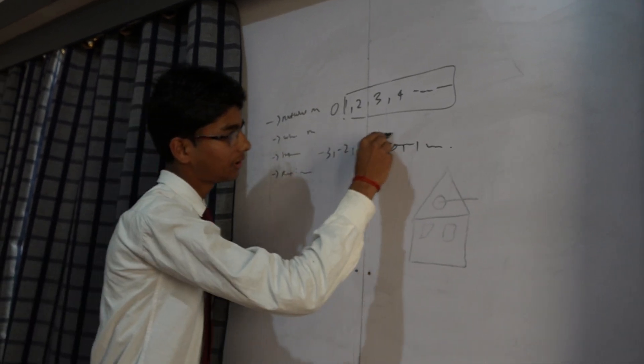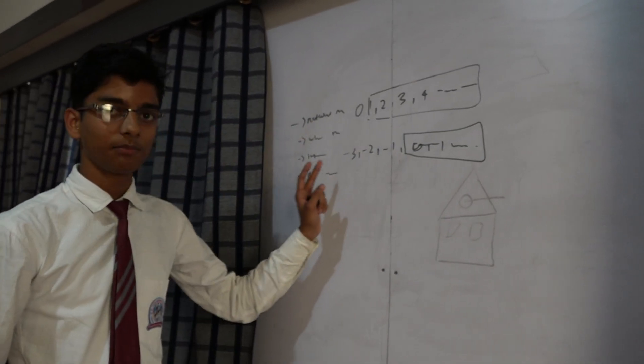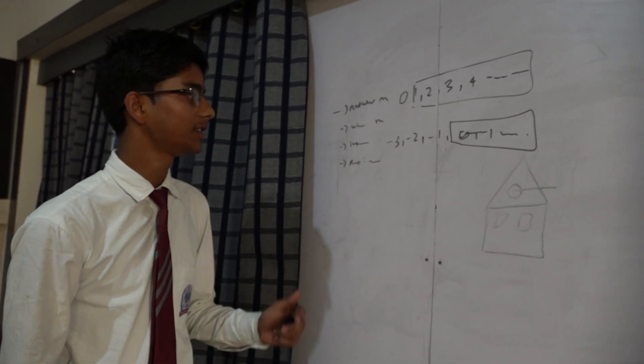Here, 0, 1, 2, 3, 4 is a whole number. When we included negative number on that in series is known as integers.